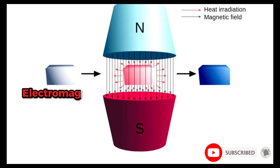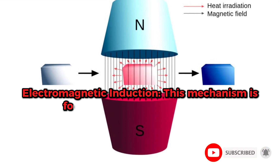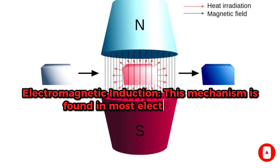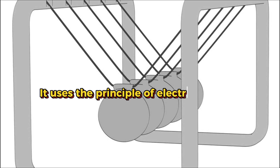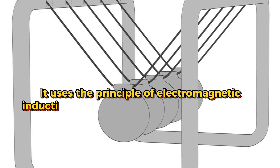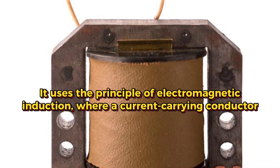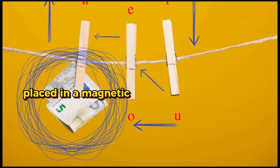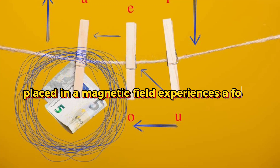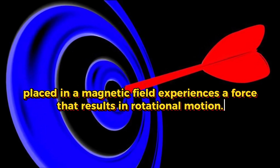1. Electromagnetic induction. This mechanism is found in most electric motors. It uses the principle of electromagnetic induction, where a current-carrying conductor placed in a magnetic field experiences a force that results in rotational motion.